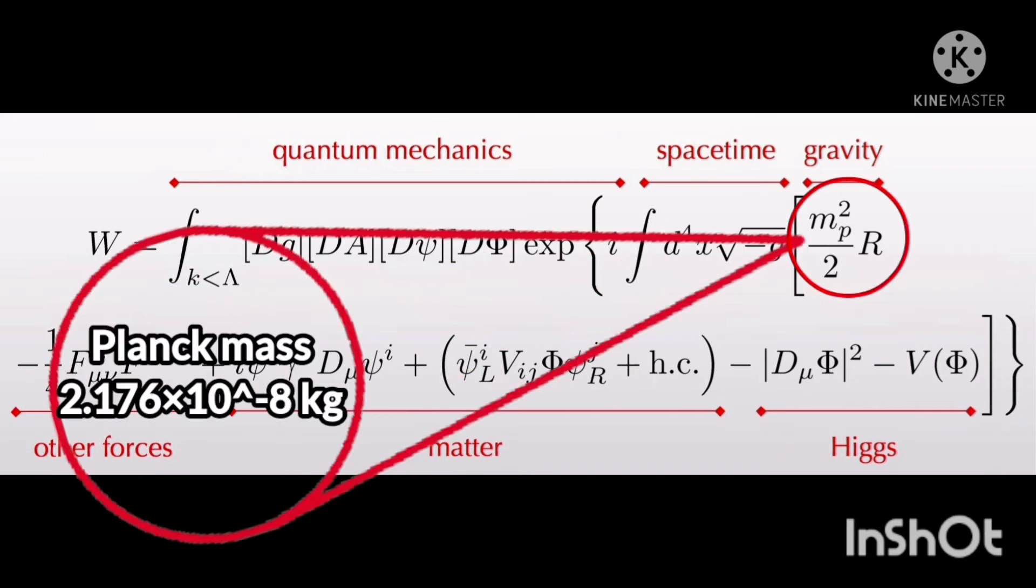M to the second power and P2 represents the Planck mass which is 2.176 times 10 to the negative 8 kilograms.